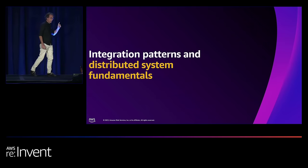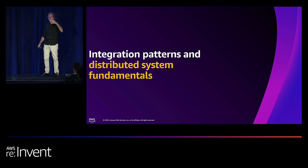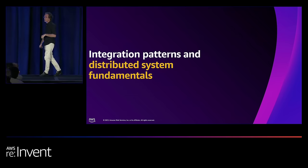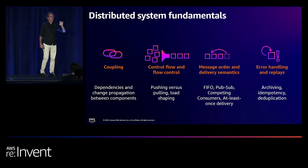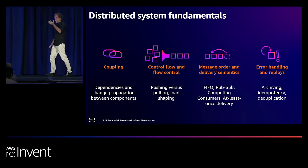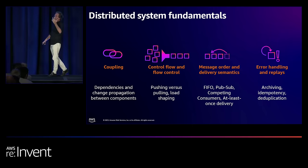The difference between integration and distributed systems is not so much in the technology, but in how teams are structured, the cadence of development, and the level of control. For the rest of the talk, we'll focus on 'the line' between the two blue boxes. We have four key elements: coupling, control flow and flow control, message ordering and delivery semantics, and error handling and replay.